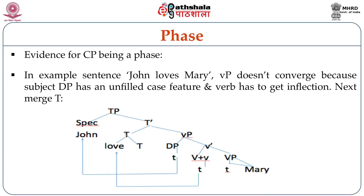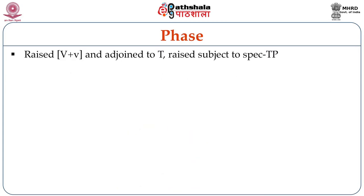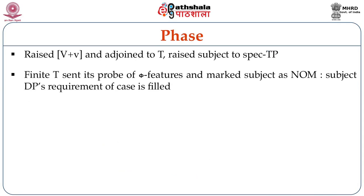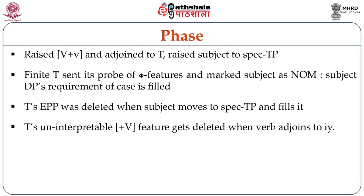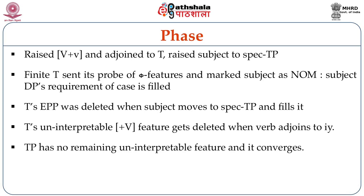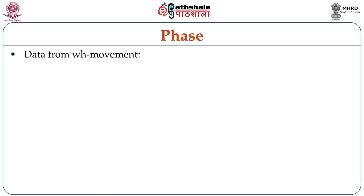The subject, occurring in the specifier position of little vP, now moves up to the specifier position of TP, leaving a trace behind. Finite T sends its probe of pi features and marks the subject as nominative, fulfilling the subject DP's case requirement. T's EPP feature gets deleted when the subject moves to Spec TP, and T's uninterpretable plus V feature gets deleted when the verb adjoins to it. Thus, TP now has no remaining uninterpretable feature and TP converges. So why don't we call TP a phase? Let us see evidence from WH-movement.